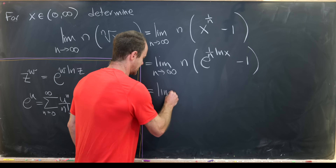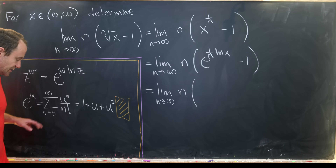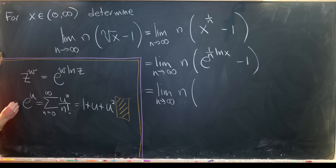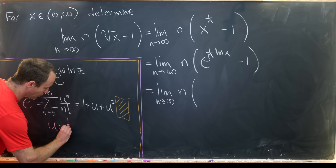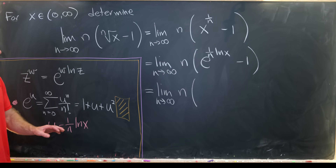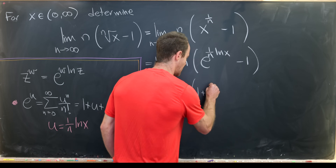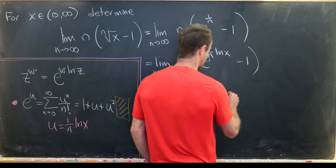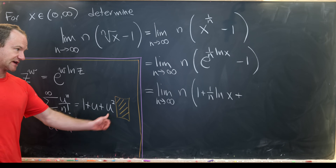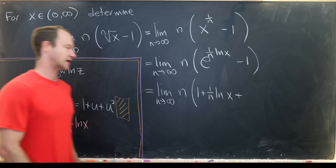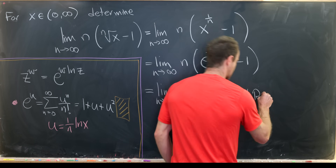Now I expand this exponential using the standard Maclaurin series, taking u equal to 1 over n times the natural log of x. This gives 1 plus (1 over n) times the natural log of x, plus (1 over n squared) times the natural log of x squared — but I'll absorb that natural log squared factor into an orange remainder box — giving (1 over n squared) times a remainder term.